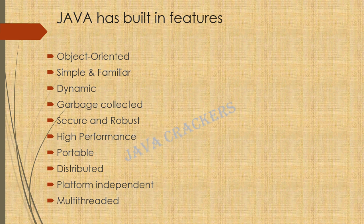Java is garbage collected. We already discussed that for memory allocation and deallocation, we have to write code and use pointers in C and C++, but in Java this process is taken care of by the interpreter. Because Java is garbage collected, it is also secure and robust. Java has high performance — the Java compiler is a Just-In-Time compiler, or JIT.